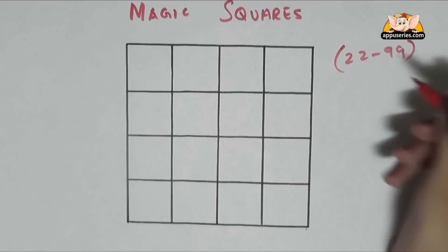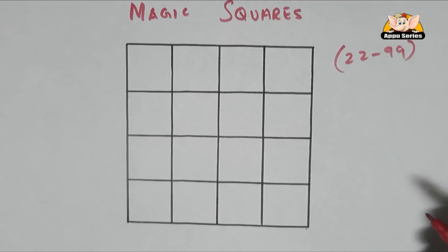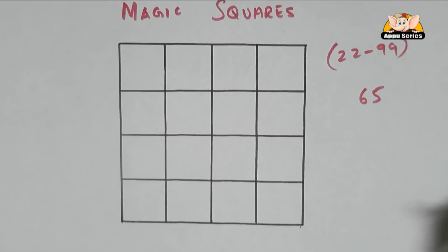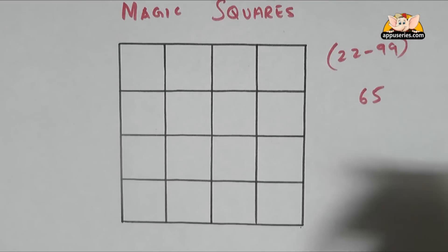Suppose they give you the number 65. Let's see how do we fill in the squares.